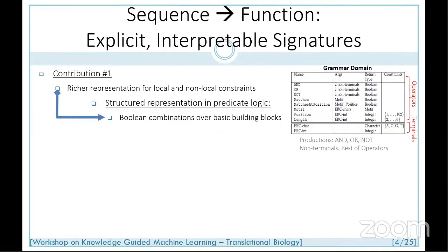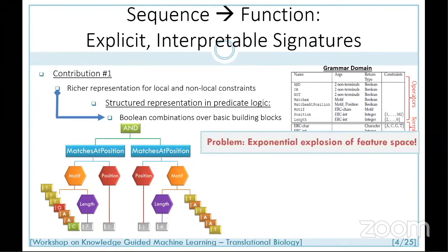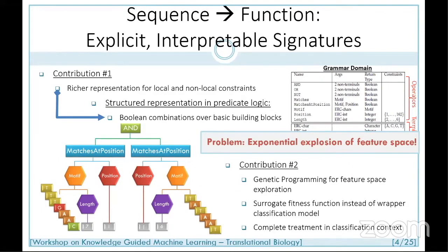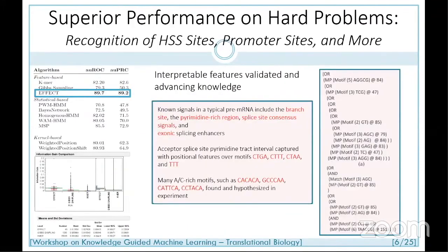We used ideas from predicate logic and grammar to build richer representations of both local and non-local constraints, constructing very complex features through Boolean combinations over basic building blocks — AND, OR, NOT on top of other compositions. We used ideas from high-dimensional space exploration to handle the exponential explosion of feature space via genetic programming — a biased sampling of the feature space guided by a surrogate fitness function. Together this formed what we call the EFFECT framework.